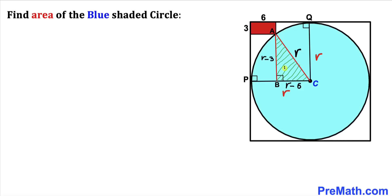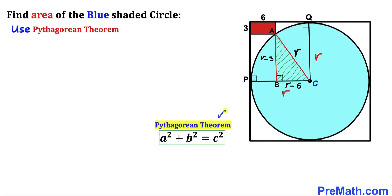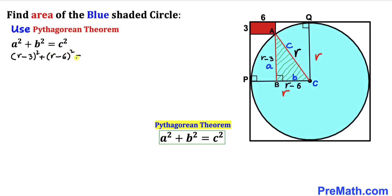Since this is a right triangle, we are going to use the Pythagorean theorem: a² + b² = c². Let me call the longest side AC our side c, this side a, and this side b. Filling in: (r − 3)² + (r − 6)² = r².